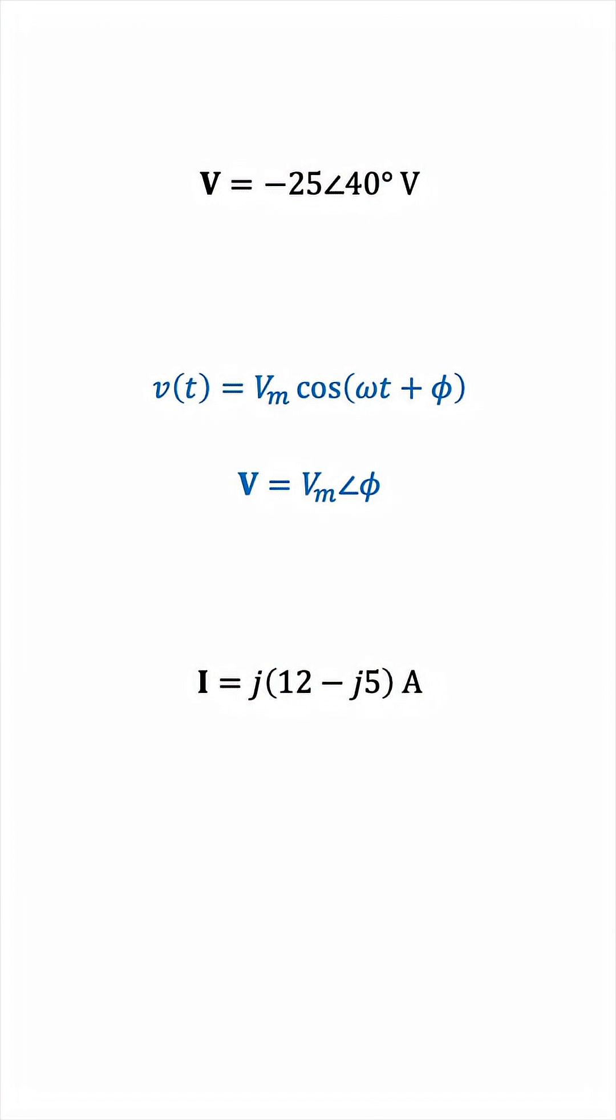So, the sinusoid corresponding to the first phasor is negative 25 cosine omega t, where omega is a frequency to be determined, plus 40 degrees. The problem with this is that the amplitude is negative. Mathematically, the amplitude may very well be negative, but the convention is for the amplitude to be positive, and any negativity will be incorporated in the phase.